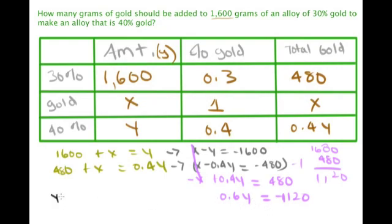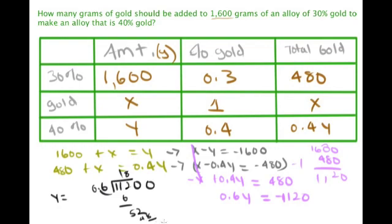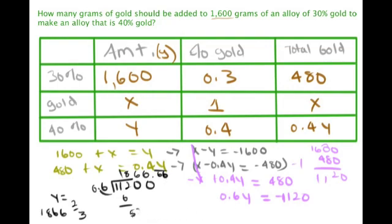So negative 0.6y equals negative 1120, meaning y equals 1120 divided by 0.6. Performing the division gives approximately 1866.666..., which is 1866 and two-thirds, since 0.6666... equals two-thirds.